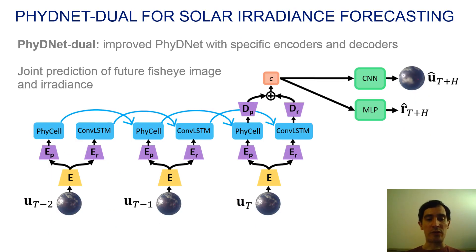Now, we present our contribution to the solar irradiance forecasting problem. We propose PhyDNet Dual. It is a slightly improved version of PhyDNet with specific encoders and decoders for both branches.